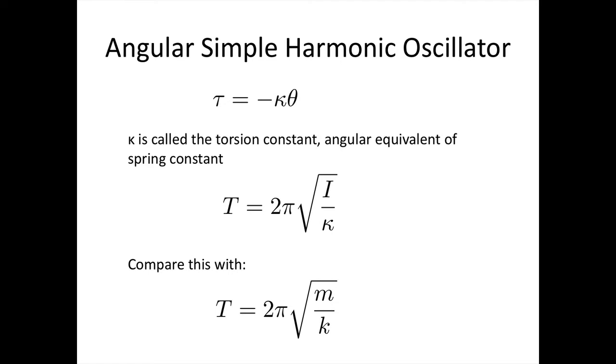Now, we can also have pendulums, or simple harmonic oscillators, that work through torsion, through rotation. In this case, the torsion is given by minus kappa times theta. So this is the torsional constant times the amount of angle.